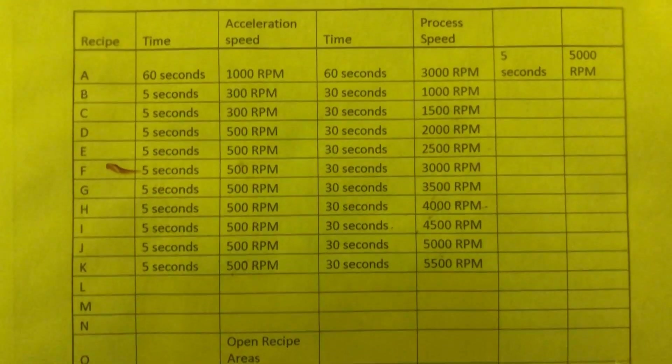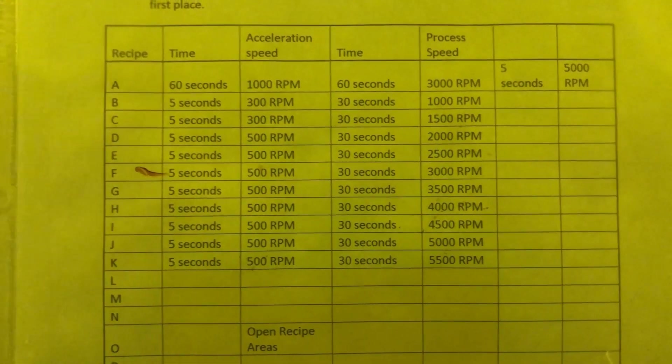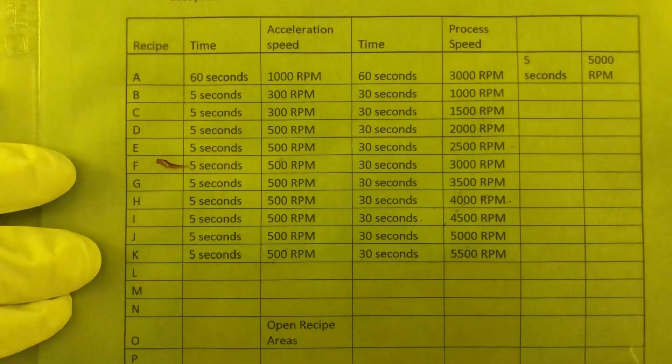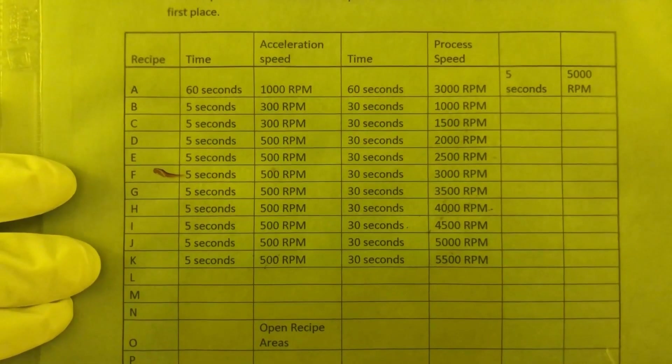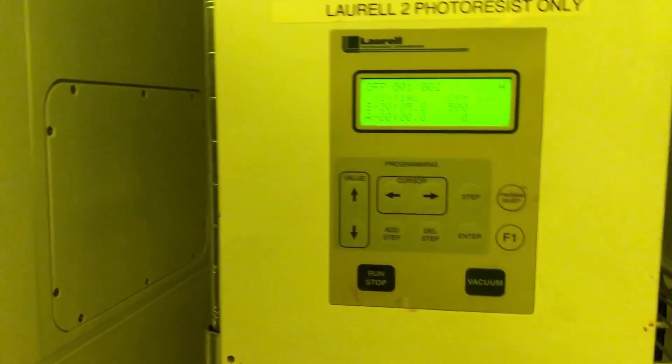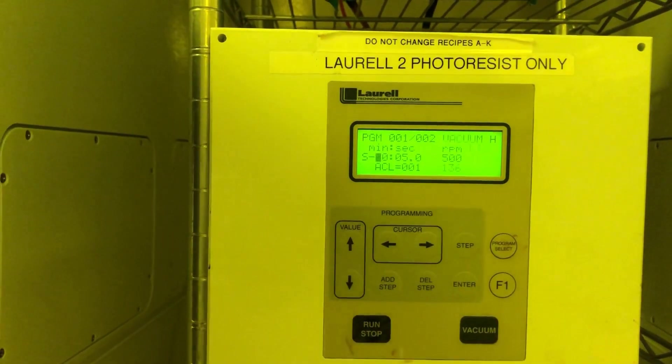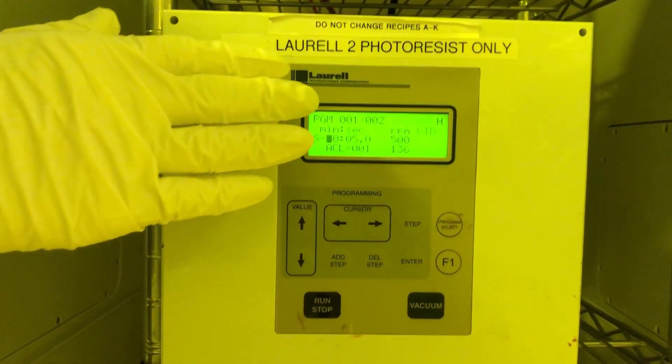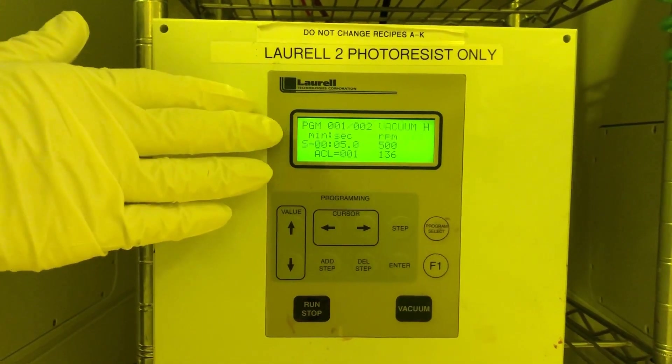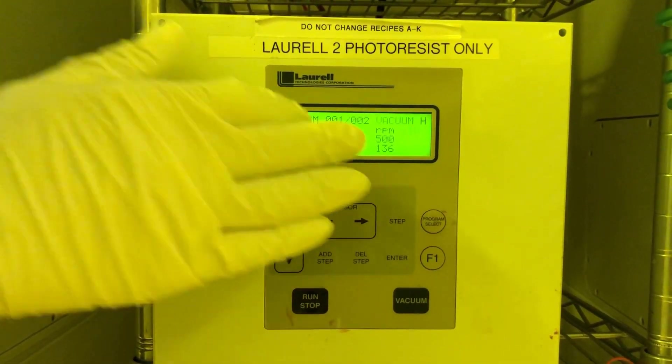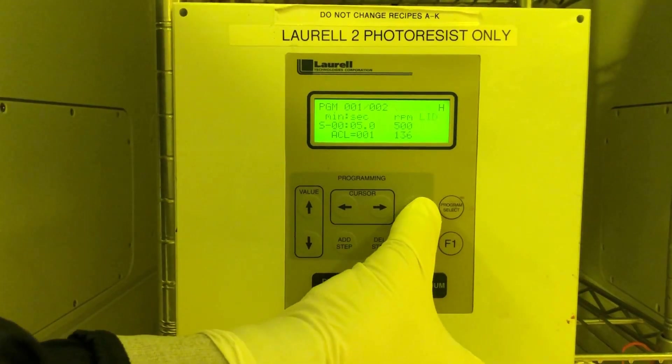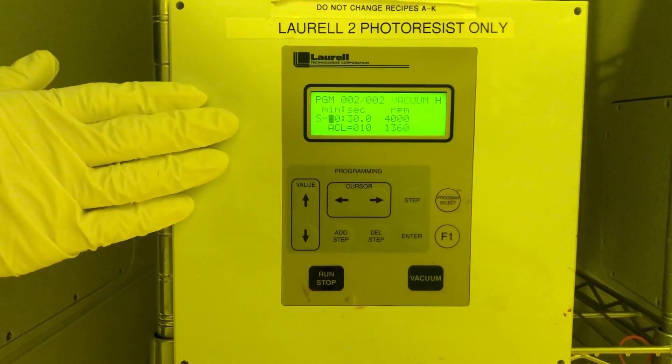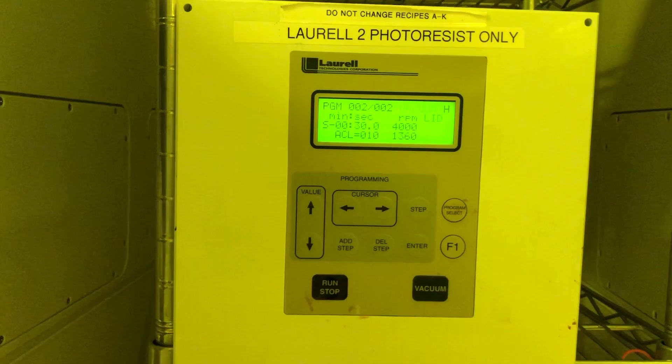I'm going to select recipe H which is already pre-programmed into the spinner. Recipes A through K have been programmed but should always be verified before running. To verify the recipe, press the F1 function key to put it into program mode. Then verify step 1 of 2 is at the correct set point: 5 seconds at 500 RPM. Then step 2 of 2: 30 seconds at 4000 RPM.